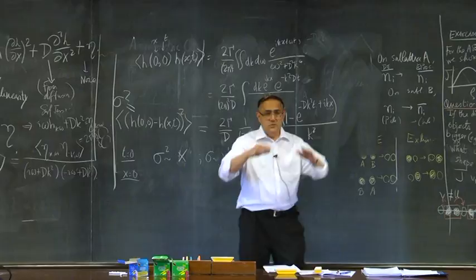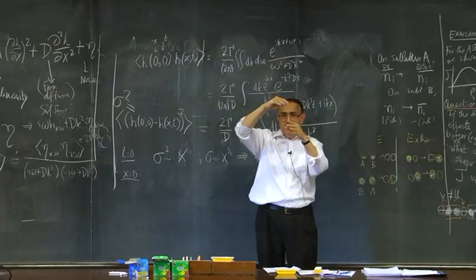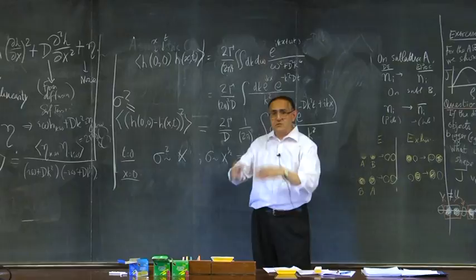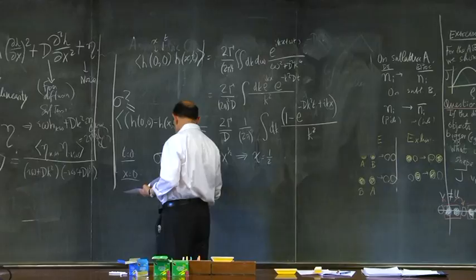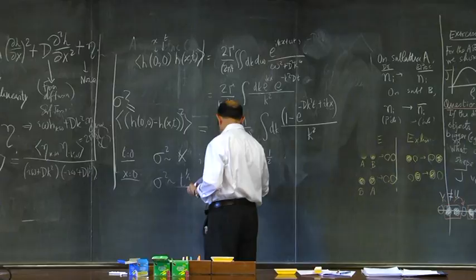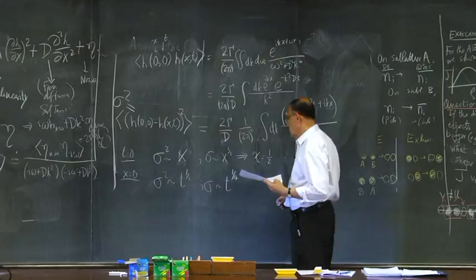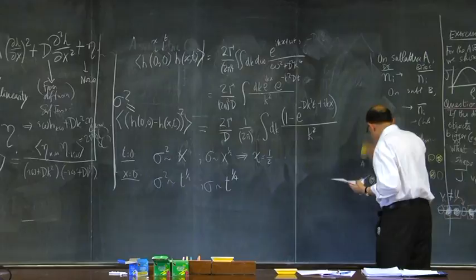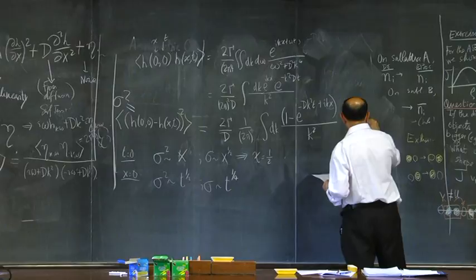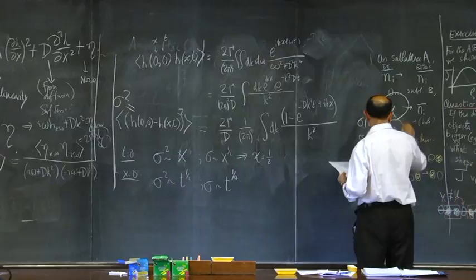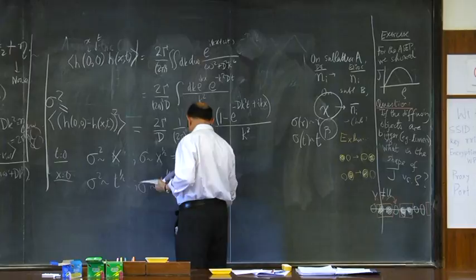New information: set x equals 0 — we have a fluctuating height profile at a fixed point. Look at the profile at one time, then after time t, and look at the mean-squared difference. Setting x equals 0 in the integral and scaling k, you find sigma squared grows like t to the half. So sigma grows like t to the quarter. In general we define sigma(t) grows like t to the power beta, so beta equals one-quarter.